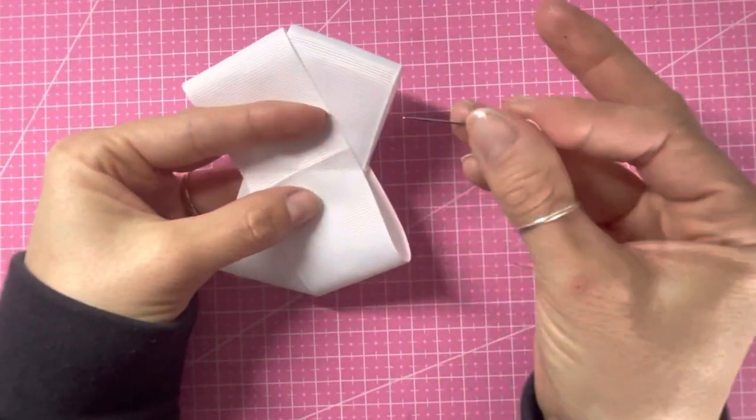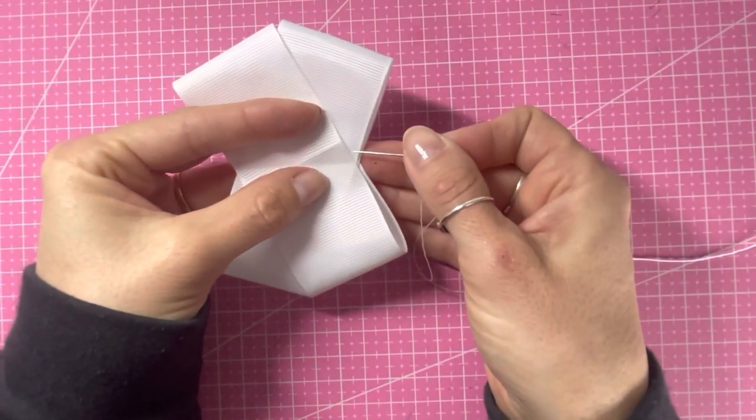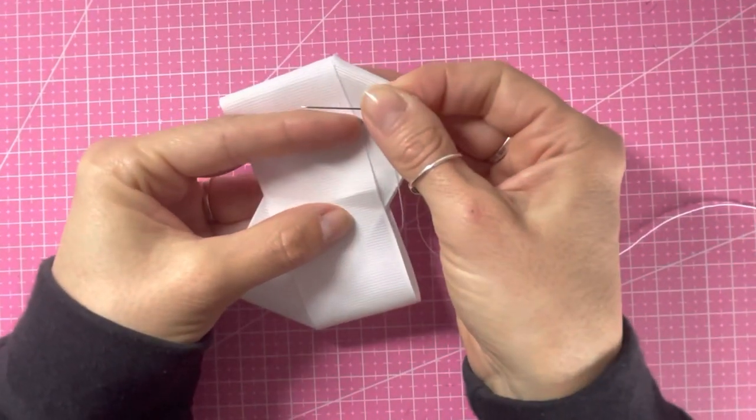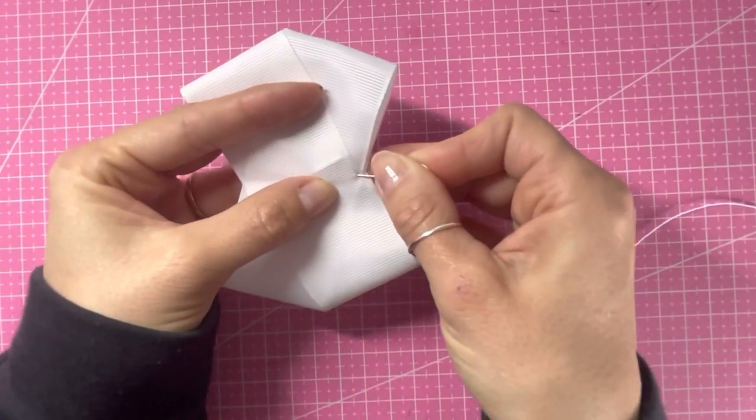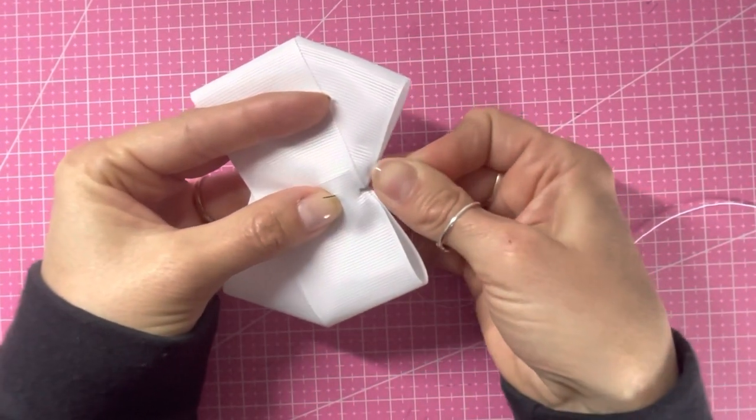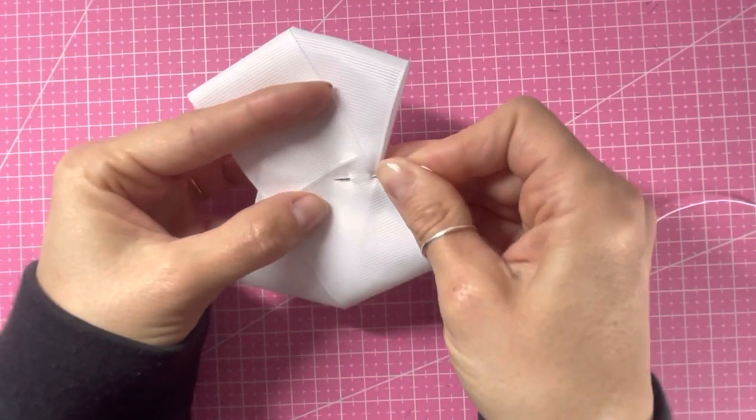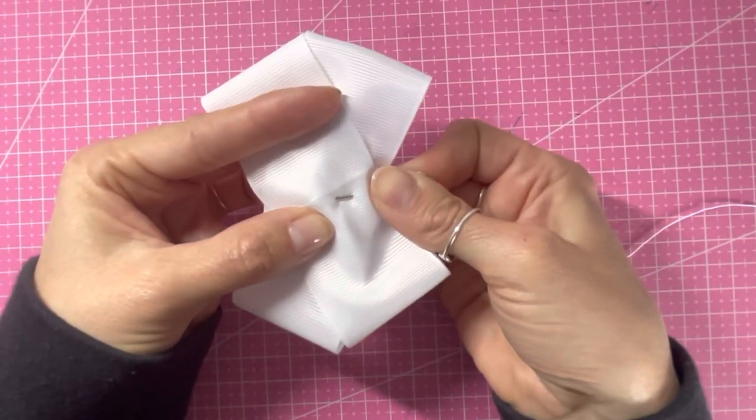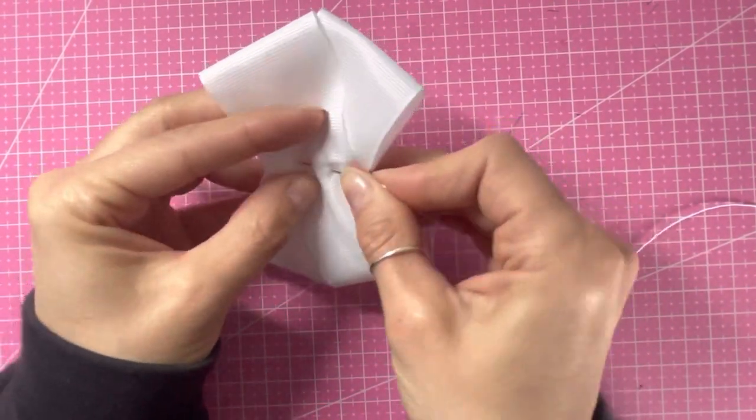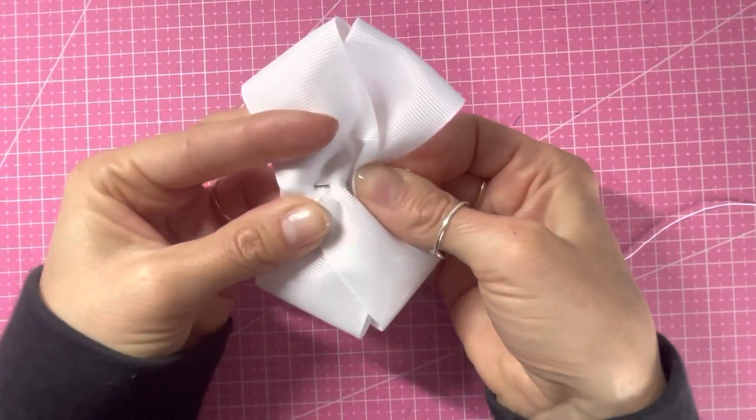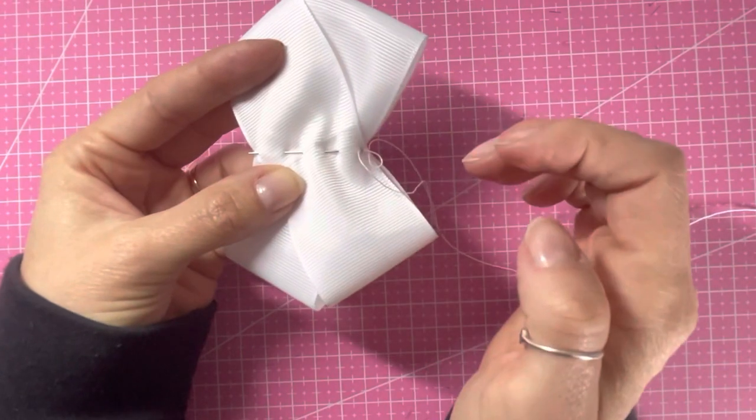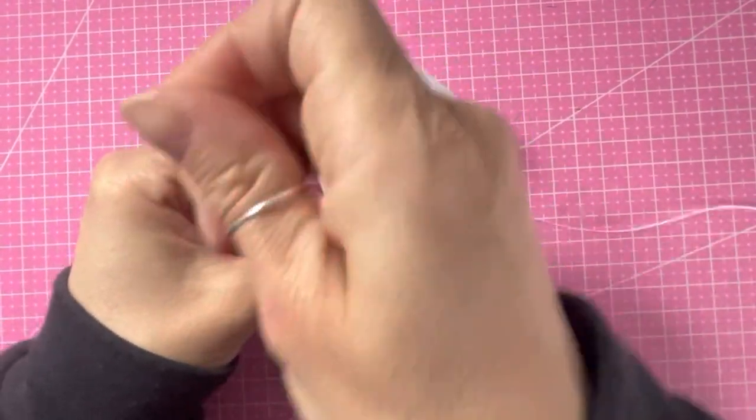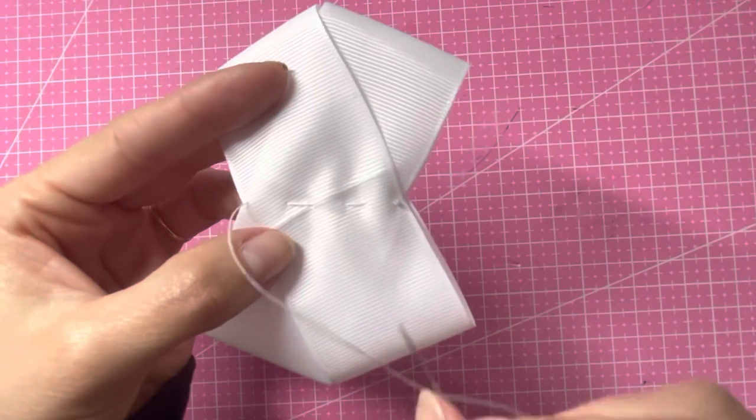So beginning where they overlap, one two three four five, and then coming out on that last corner again catching all the layers where they overlap. Pull that all the way through so it looks like this at the top.